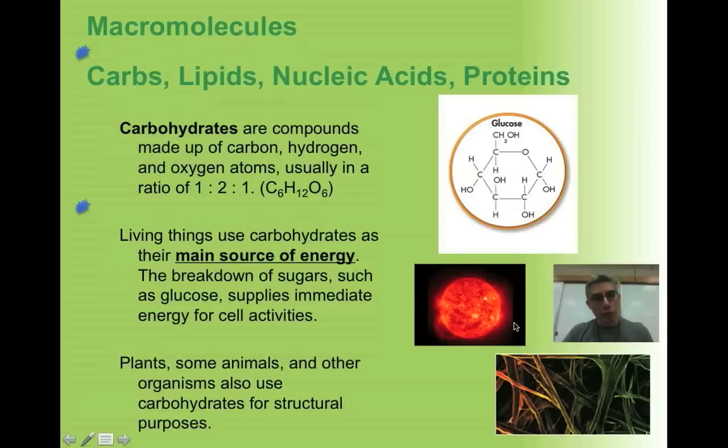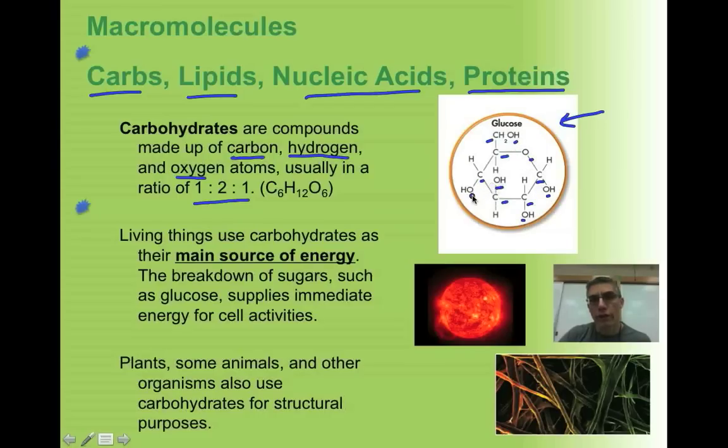The first macromolecule that we're going to look at is going to be carbs. There's going to be four different types of macromolecules. We're going to have carbs, lipids, nucleic acids, and proteins, and we're going to look at each one of those in detail. The first one we're going to look at is carbohydrates. Carbohydrates are made of carbon, hydrogen, and oxygen atoms, but they're put together in a certain ratio, a one-to-two-to-one ratio. If you look on the right-hand side, this is an example of a carbohydrate. It's an example of a simple sugar, and you can see one, two, three, four, five, six carbons. You can look at the oxygens the same way. We have one, two, three, four, five, six oxygens. Then, of course, if we counted the hydrogens, there would be 12 hydrogens there as well. So that's how carbohydrates are put together if it's a simple carbohydrate.